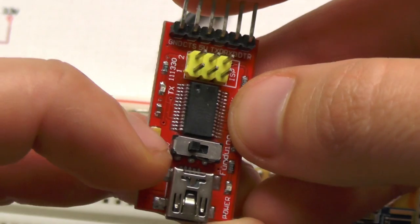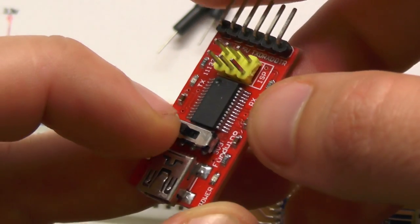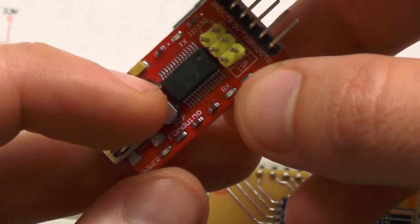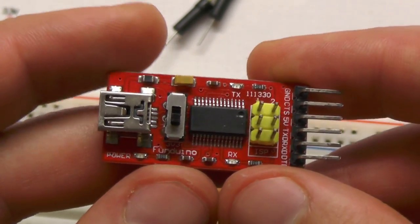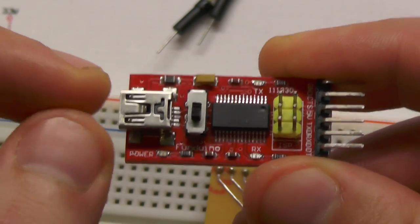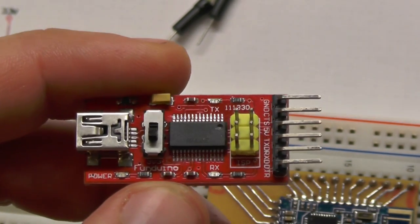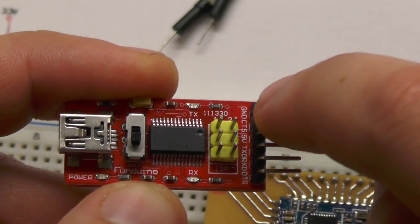It says 5 volts or 3.3 volts and we have to set up this to 3.3. This is really important since we connect this to the USB which has 5 volts and we want to connect it here to the serial connectors.